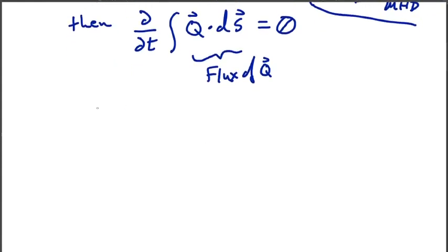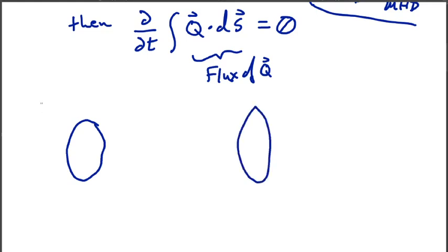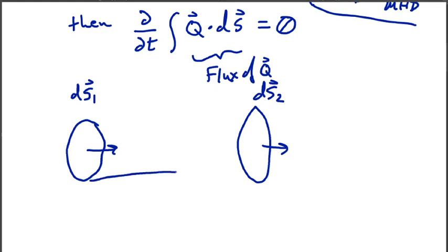Let's start by drawing our simple surfaces. We consider two surfaces in the fluid separated by some time, calling them S1 and S2, and we're going to think in terms of differential surfaces — very small surfaces dS1 and dS2. These two surfaces are connected in time by the flow of our ideal fluid, and in some time delta t, our surface one sweeps out a cylinder to surface two.